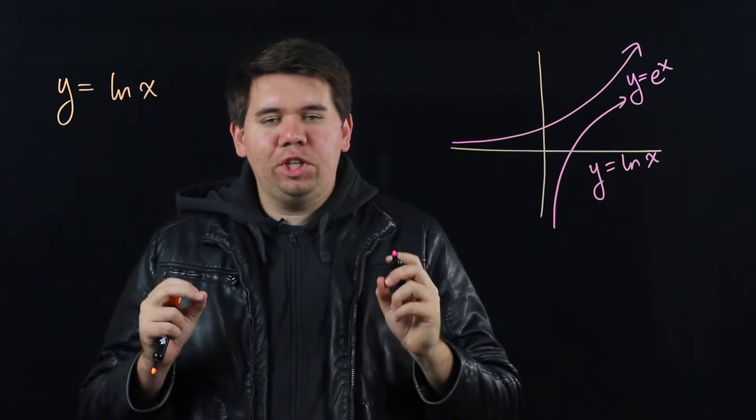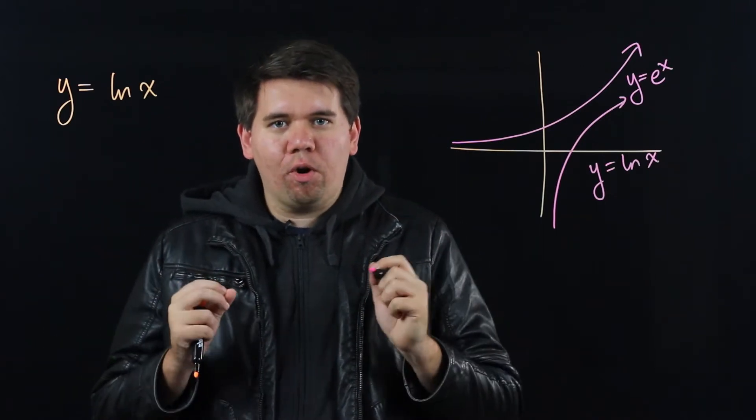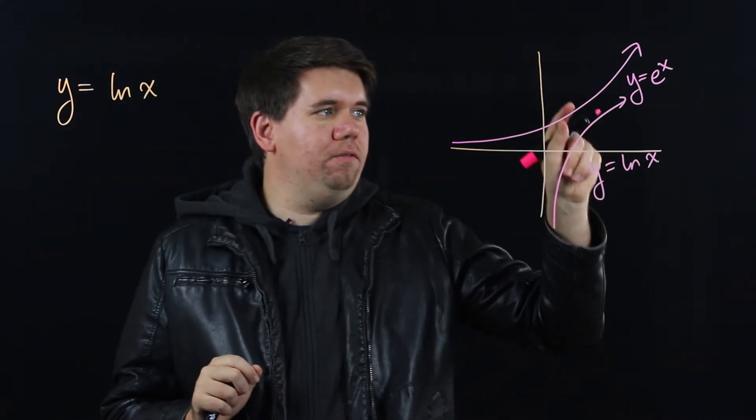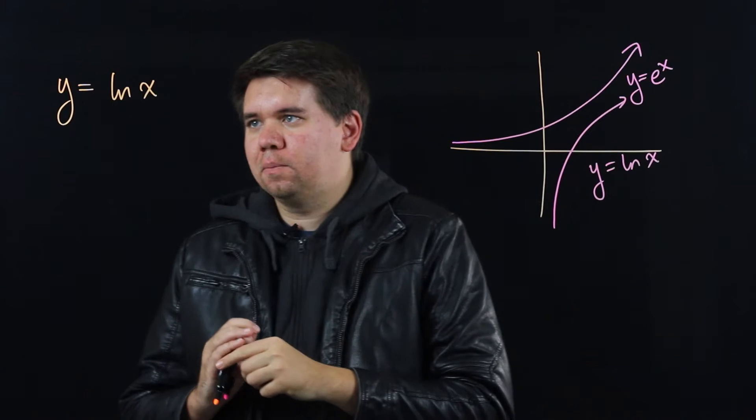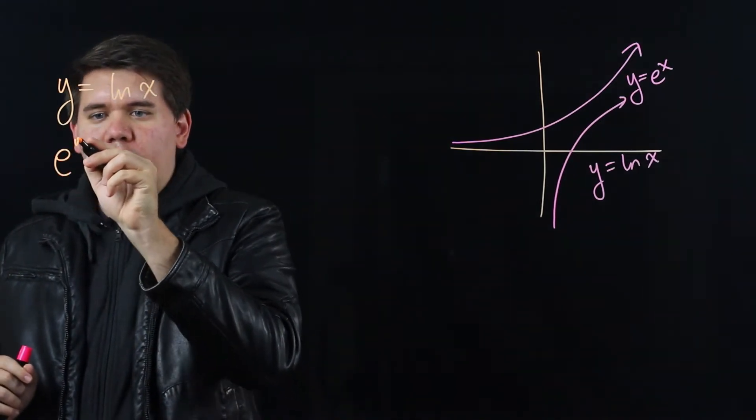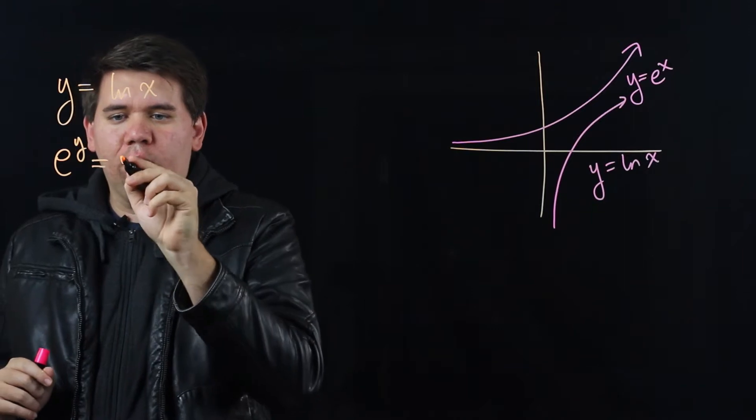The trick: change it back into a function we already understand. Since natural log is the inverse of e to the x, we can rewrite this equation as e to the y is equal to x.